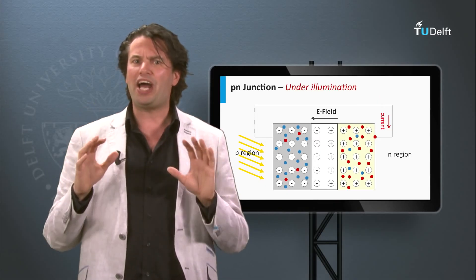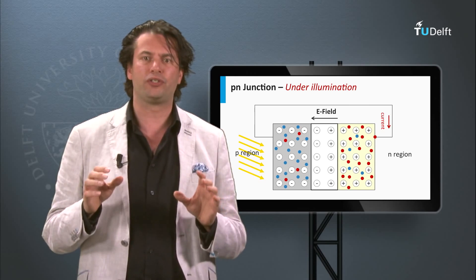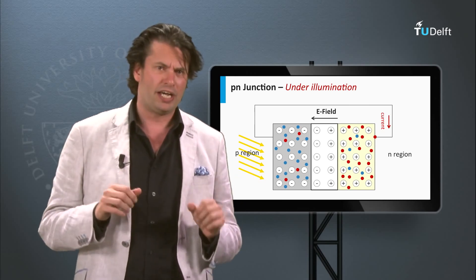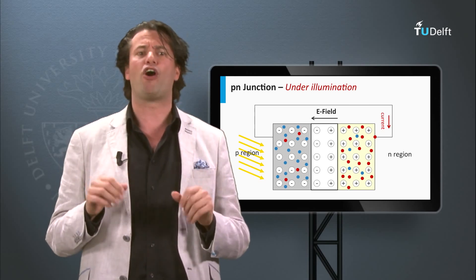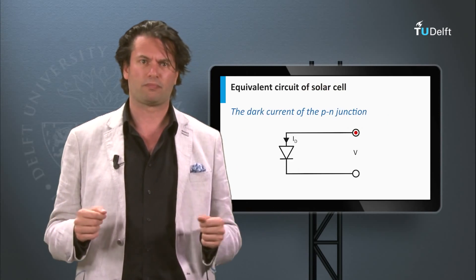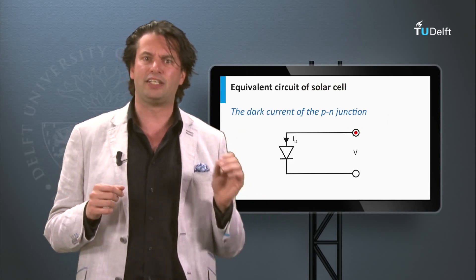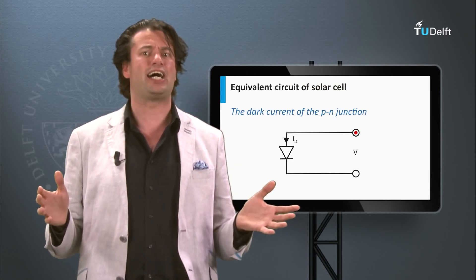Now we are going to construct an equivalent circuit in which we can describe the behavior of a P-N junction solar cell. We have discussed that in the dark a P-N junction behaves like a diode.